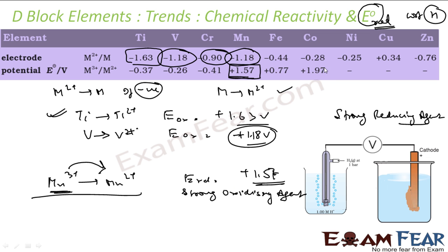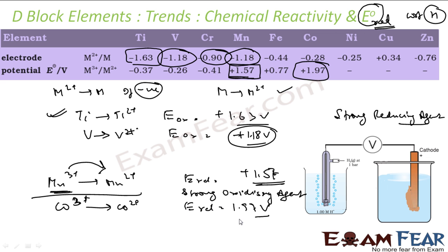Similarly, Co3+ to Co2+ has E0 = +1.97 V, which is a very large number. This means Co3+ has a huge tendency to be reduced and is a very good oxidizing agent. Using the E0 standard electrode potential values, we can comment on the reactivity of transition metals as reducing or oxidizing agents.